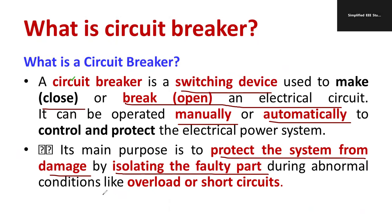The major abnormal conditions are overload or short circuit, at which point the current goes to infinity — a dangerous condition that may lead to fire hazards. To overcome that, the circuit breaker acts immediately, isolating the healthy part from the faulty part. The rectification can be done manually or automatically. This is exactly the meaning of a circuit breaker.